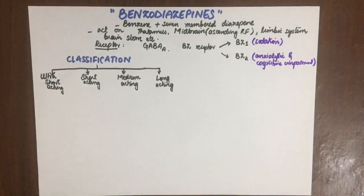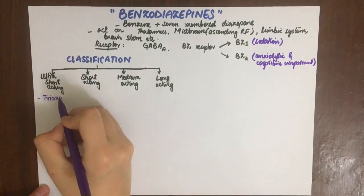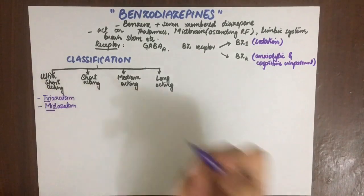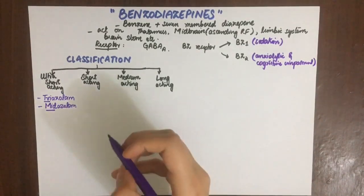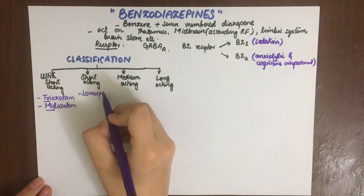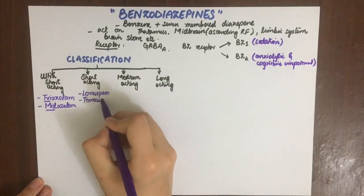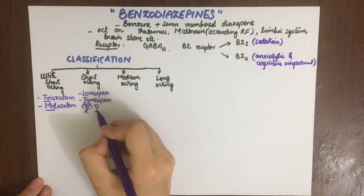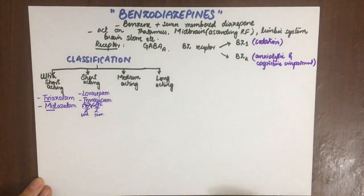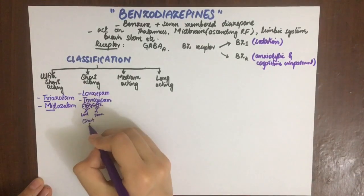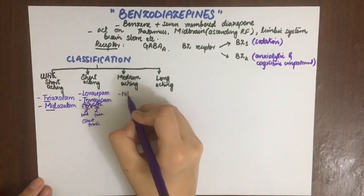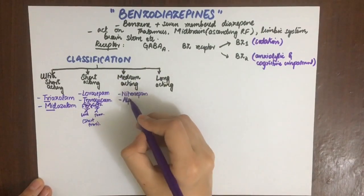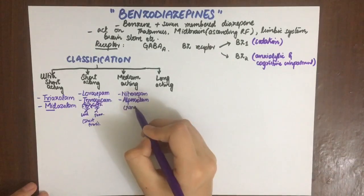Ultra-short acting benzodiazepines are triazolam and midazolam — remember with 'try' and 'mid,' so 'try-mid.' Short acting are lorazepam and temazepam — remember them with two short friends, one named Laura and the other Tima. Laura and Tima are two short friends.